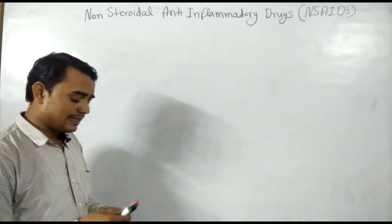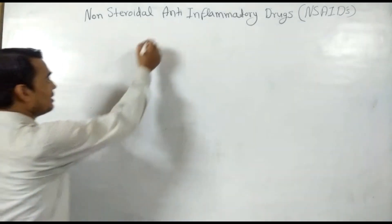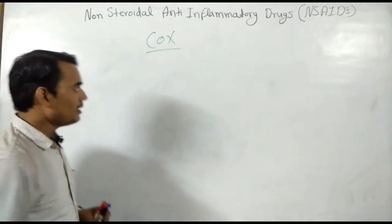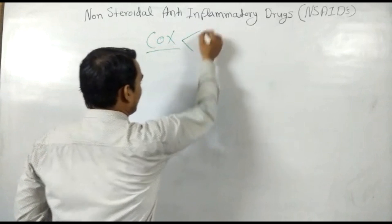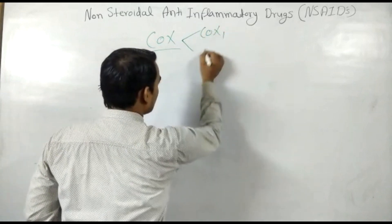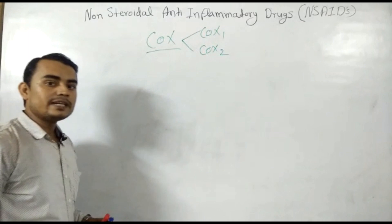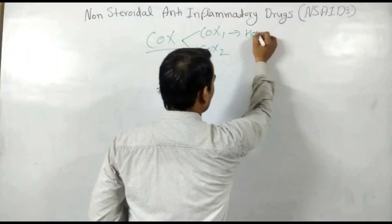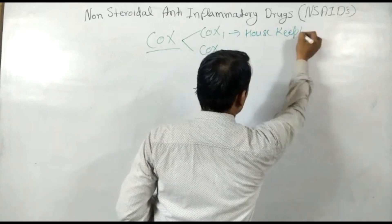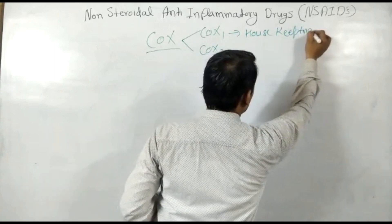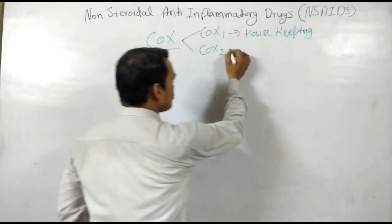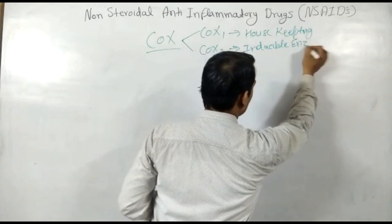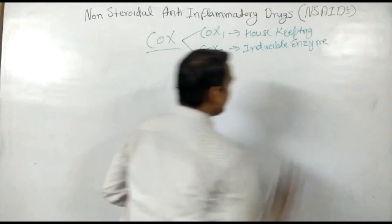As we know, all the NSAIDs act mainly on the COX enzyme. COX means cyclooxygenase enzyme. COX enzymes are basically two types: COX-1 and COX-2. COX-1 enzyme is called the housekeeping enzyme, while COX-2 enzyme is the inducible enzyme.